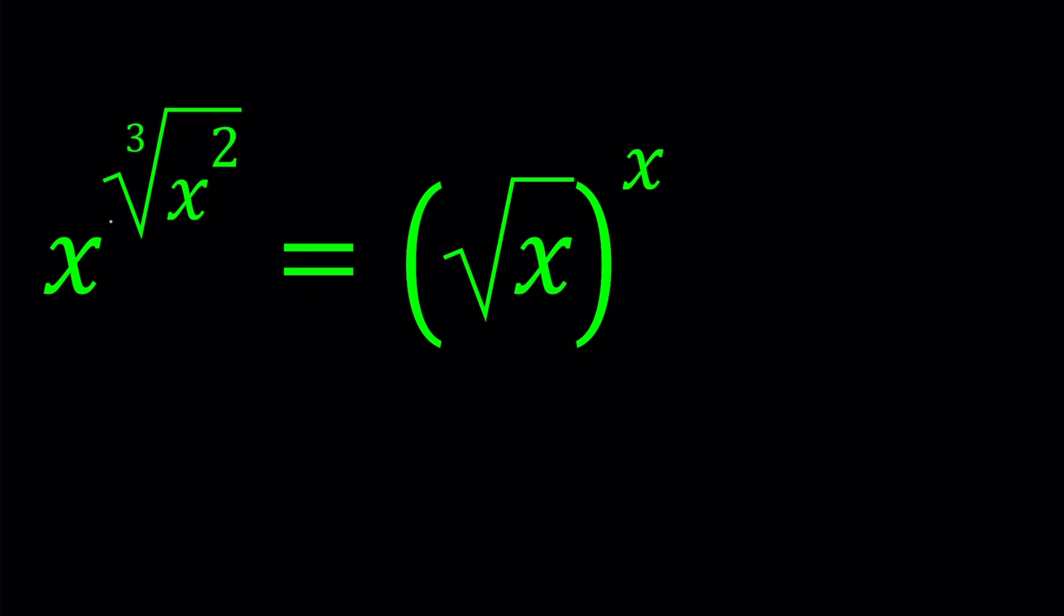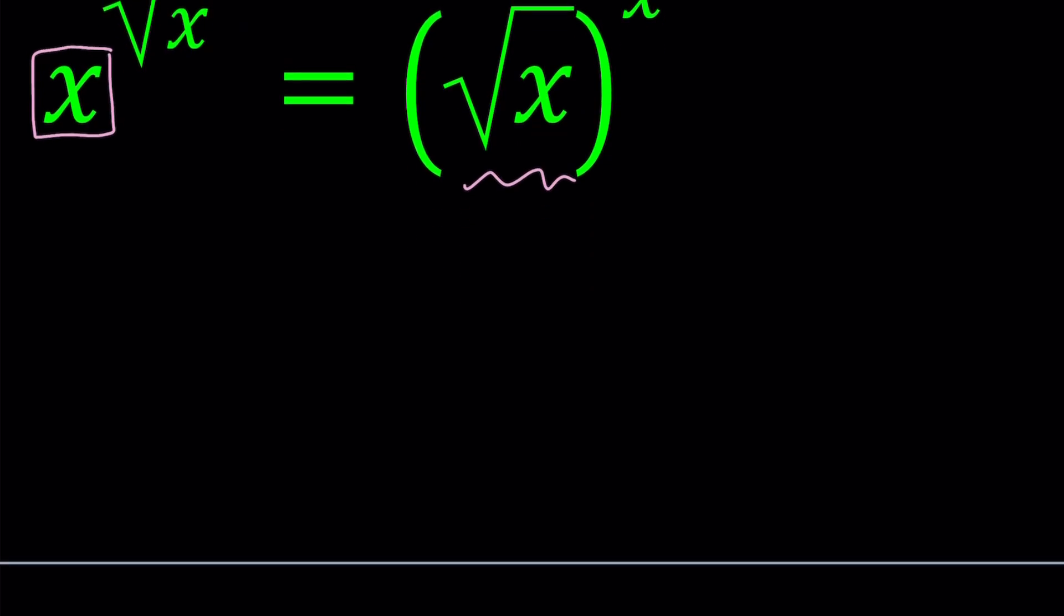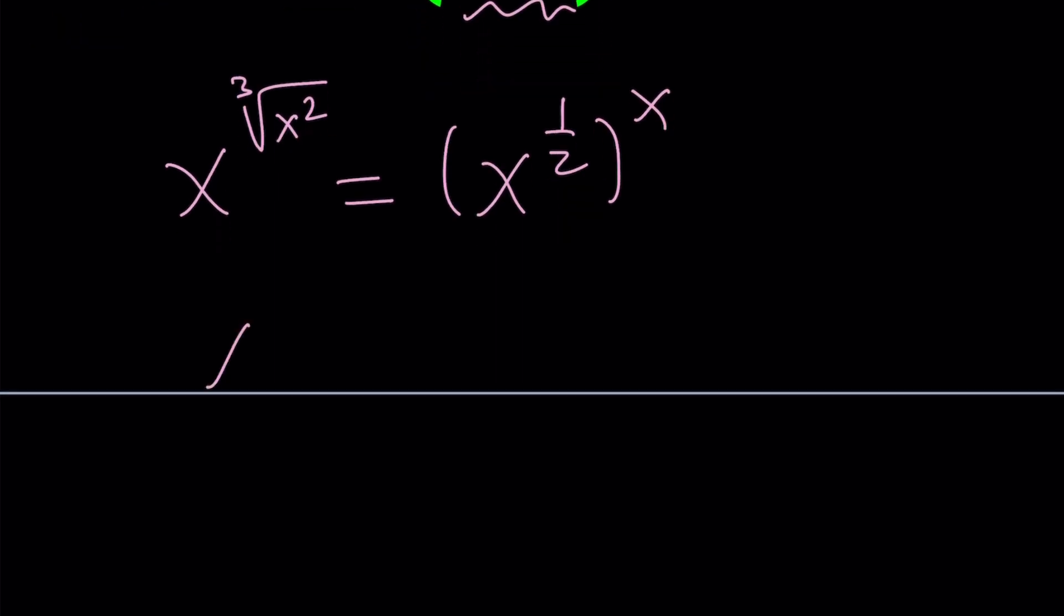First of all, notice that we have x as a base here, but square root of x here. So let's go ahead and write the square root of x as x to the power 1 half. That's going to help us equate the bases. And now we get x to the power cube root of x squared equals, what happens here is we multiply the exponents, so it's going to be 1 half of x. Now we have the same base.